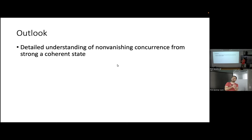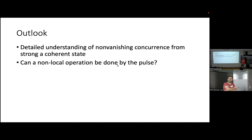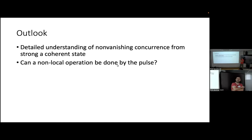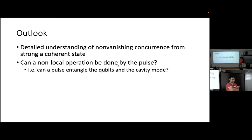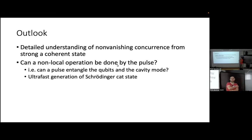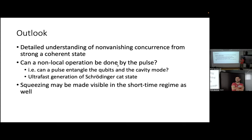For the outlook: we want to better understand this non-vanishing concurrence from the strong coherent state, and maybe design other classical states from which we can get concurrence closer to one. All our operations on the cavity-qubit system were local just after the pulse. However, we can ask whether a non-local operation can be induced by the pulse — for that we have to go to the next order of approximation of our unitary perturbation theory, to see if we can generate a non-local operation already during the pulse. We might also think about generating Schrödinger cat states and observing the squeezing generated due to the interaction with the qubits on short timescales. Thank you.